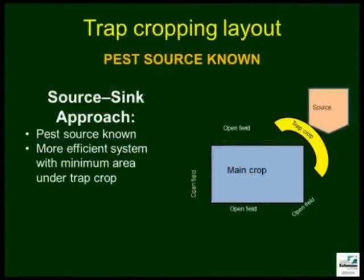If the pest is known, trap crops can be used in a highly efficient manner using the source-sink approach. In this layout, trap crops are planted at specific locations to arrest insect migration. It may take a few years of trap crop use on a farm to generate sufficient knowledge about the pest source.